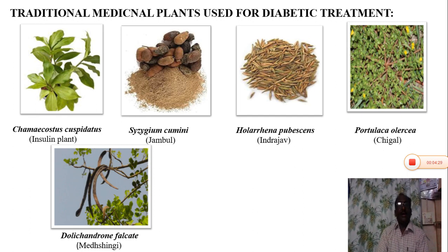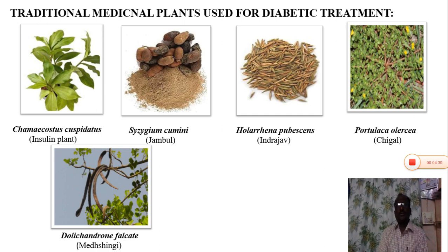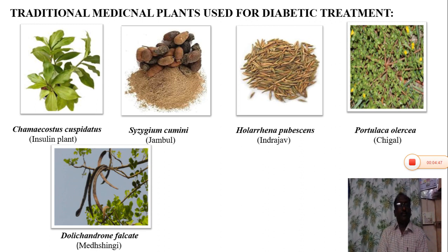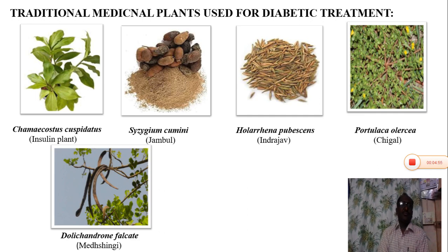In India, there are various traditional medicinal plants used for diabetic treatment — around 300 species are known. However, my research was especially focused on the area where we live, where a variety of anti-diabetic plants were available.